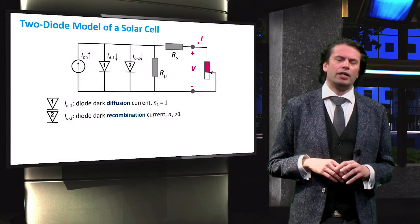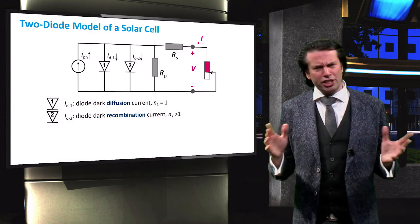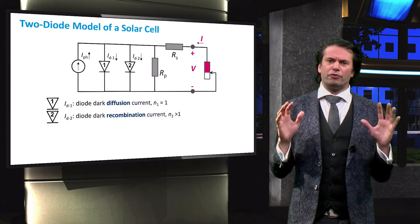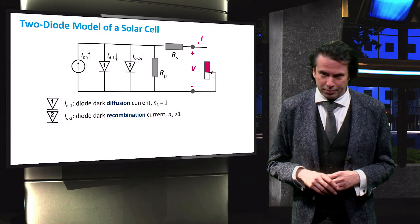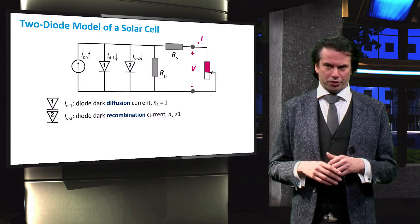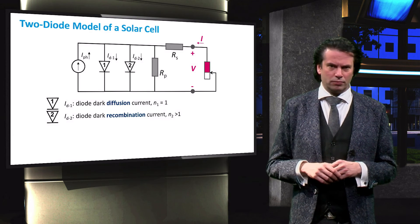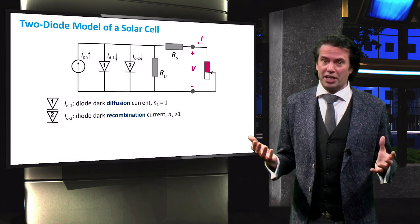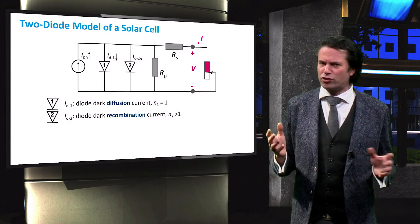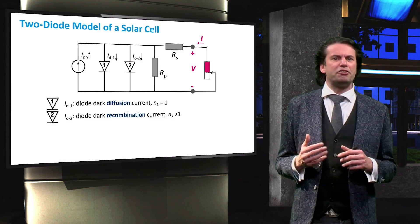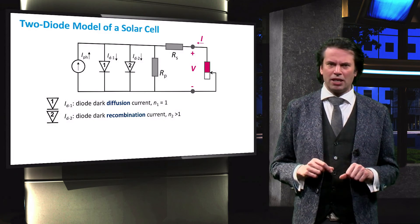Now, this single diode model is good for electrically simulating a solar cell. However, sometimes it is insufficient. For this purpose, we can increase the model's complexity. Here you can see a very similar schematic to the single diode model, but now there are two diodes. The reason for this is that there are two sources for current sink in a solar cell, and they need to be modeled separately. Diode 1 represents the dark diffusion current and has an ideality factor of 1. Diode 2 represents the dark recombination current and will have an ideality factor greater than 1. Many times this second diode will have an ideality factor of 2, but we will learn in a future video that this is only true for very specific cases and is not always appropriate.